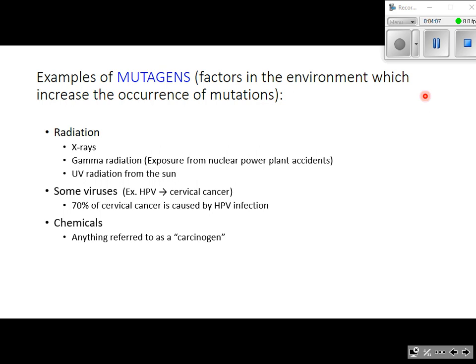There are a variety of chemicals that can increase mutation rates, and it's important to note that just because a mutation occurs does not mean a cancer is going to result. Mutations do not always cause cancer, but all cancers do start as mutations. So anything that increases a mutation rate also increases the possibility of cancer. Any chemical mutagen known to increase the likelihood of cancer is referred to not only as a mutagen, but as a carcinogen.